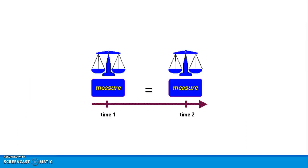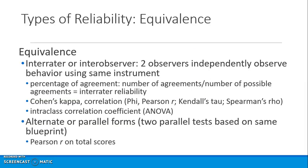Here's an image from Google representing test-retest reliability with a time interval. You also look at equivalence as a type of reliability. With inter-rater reliability, two observers independently observe behavior using the same instrument. You look at percentage of agreement — how many possible agreements are there. Cohen's kappa and other correlation coefficients can be used depending on the level of data and scaling of the instrument's items.